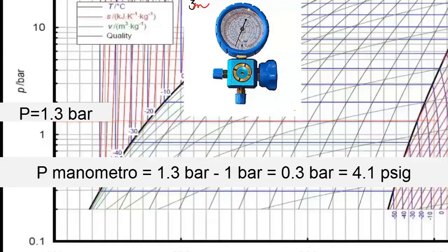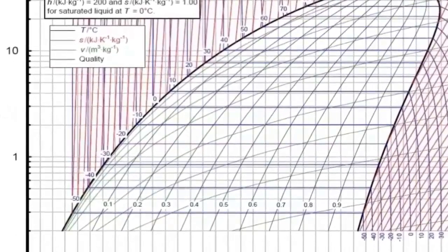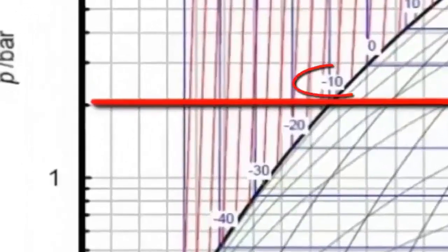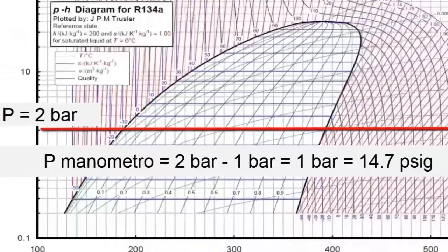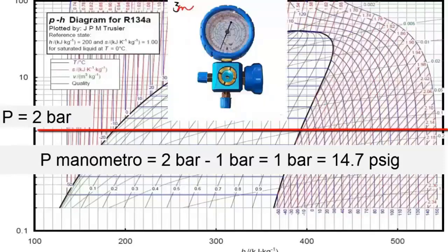For a refrigeration application at minus 10 degrees Celsius, according to the Mollier diagram, there is an absolute pressure of 2 bars. To find the pressure that the blue or low manometer should mark, we must subtract atmospheric pressure from the absolute pressure. By subtracting 2 bars minus 1 bar from the atmospheric pressure, we have a manometer pressure of 1 bar.